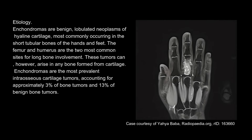Etiology. Enchondromas are benign, lobulated neoplasms of hyaline cartilage, most commonly occurring in the short tubular bones of the hands and feet. The femur and humerus are the two most common sites for long bone involvement. These tumors can, however, arise in any bone formed from cartilage.